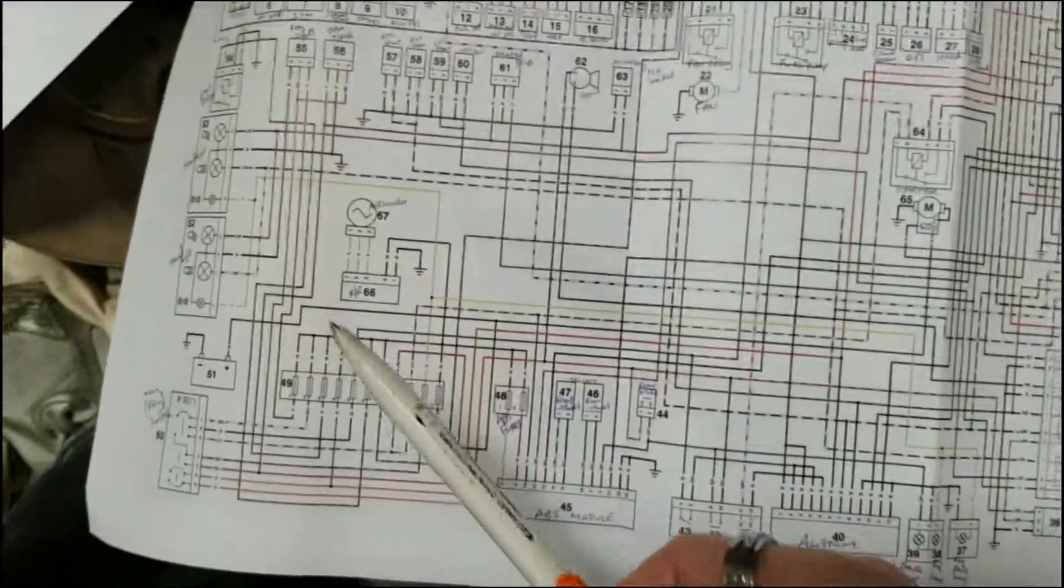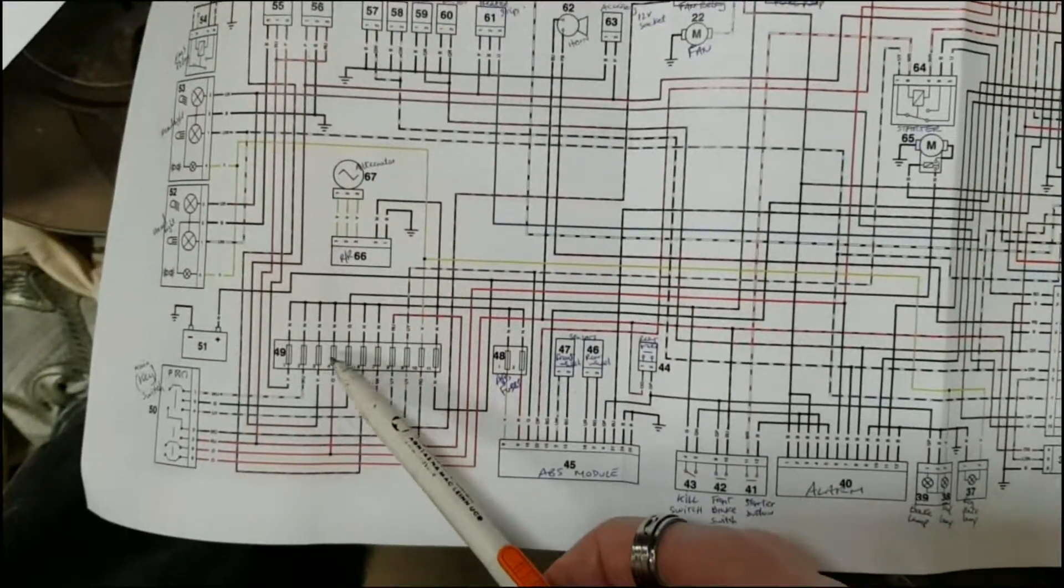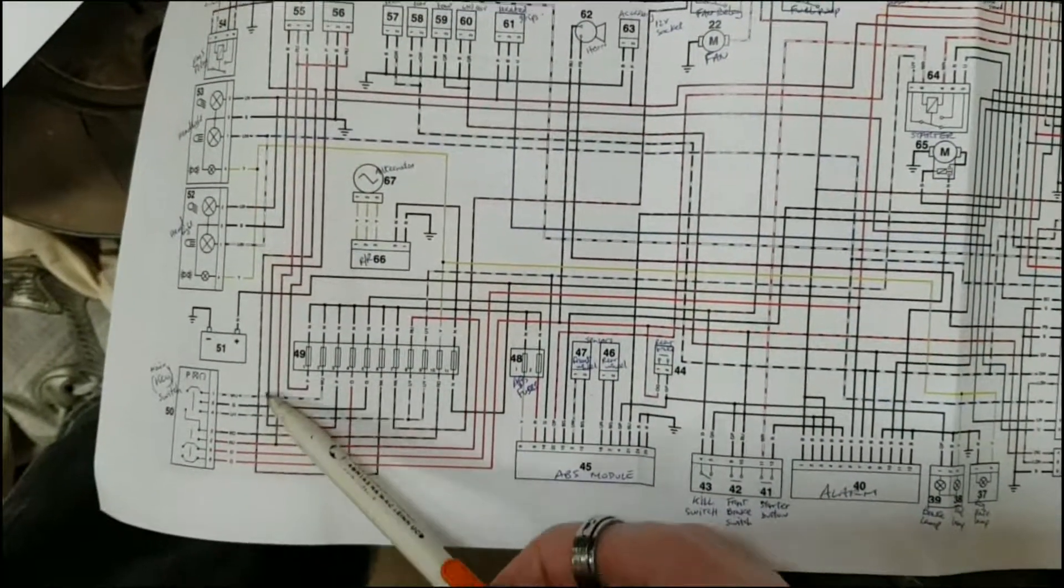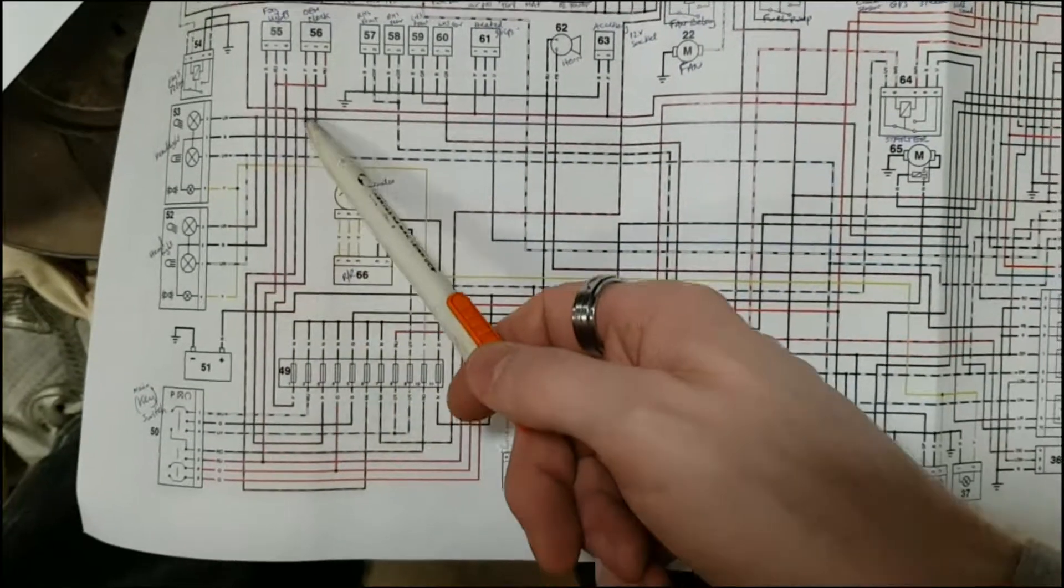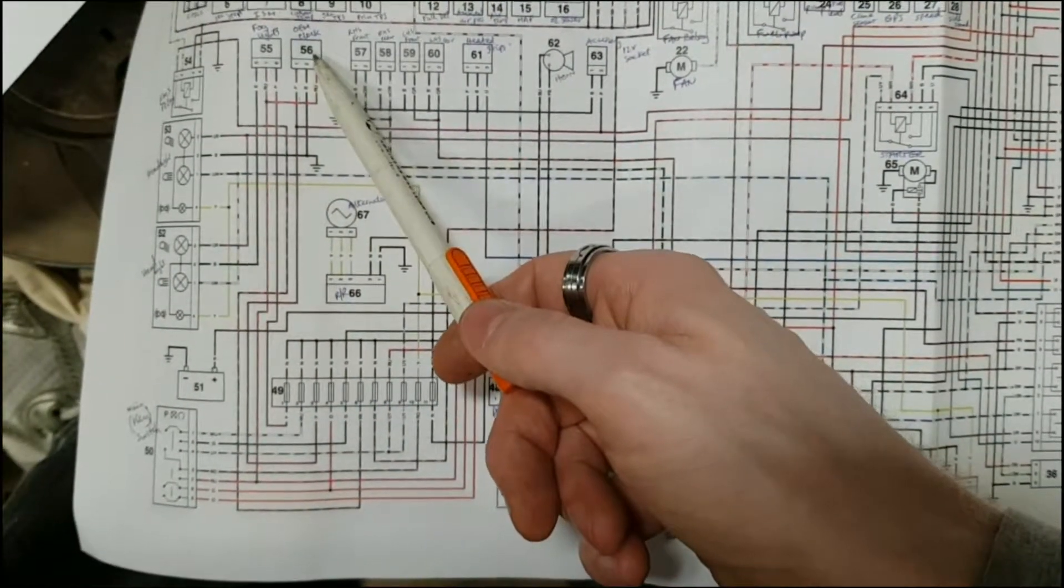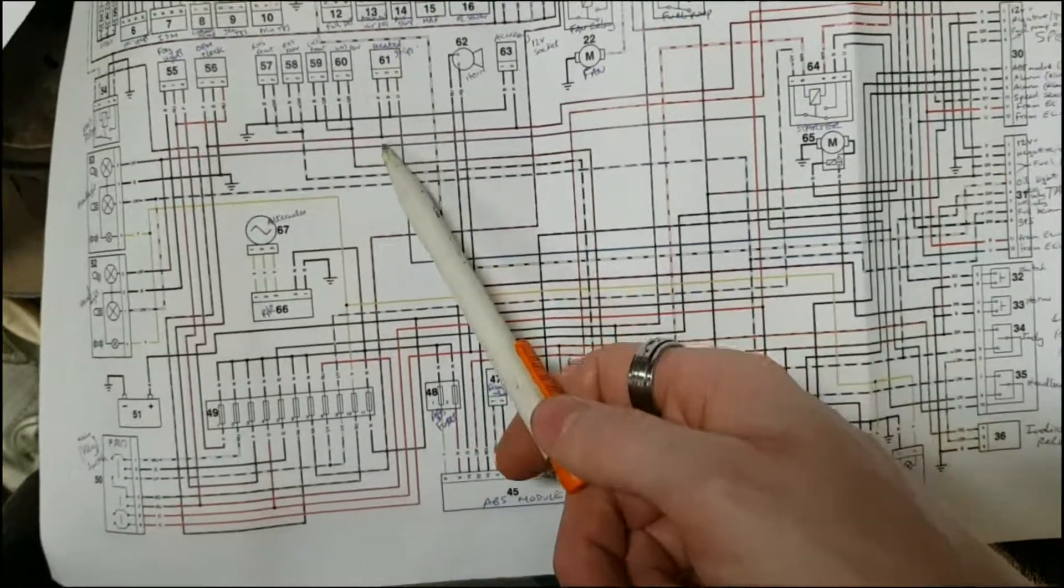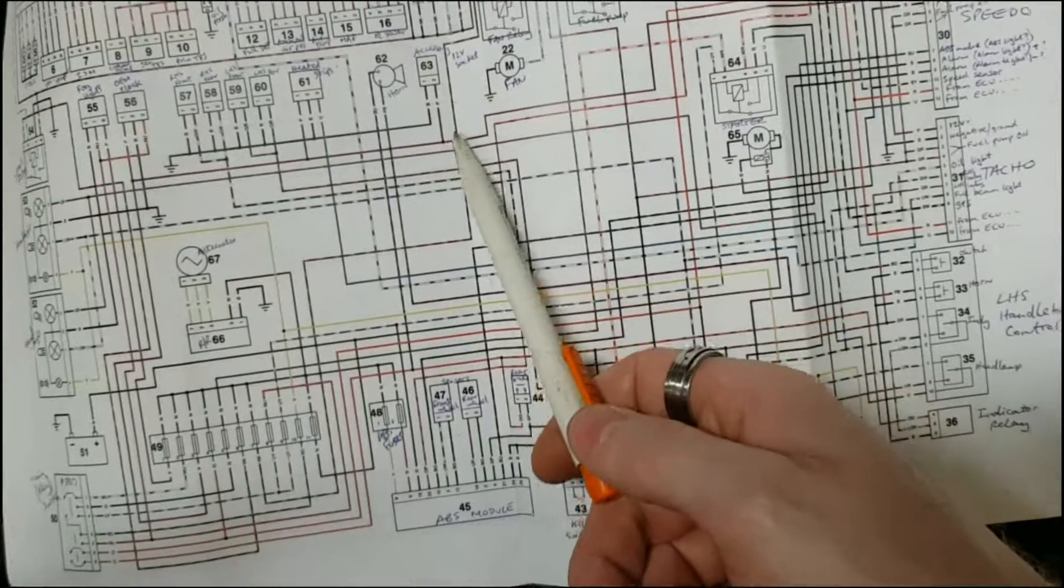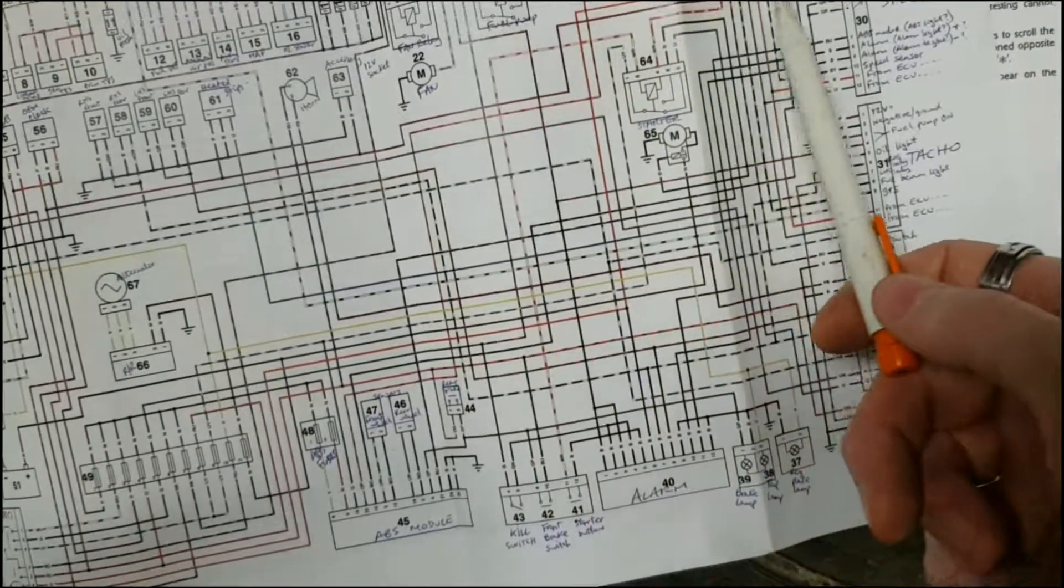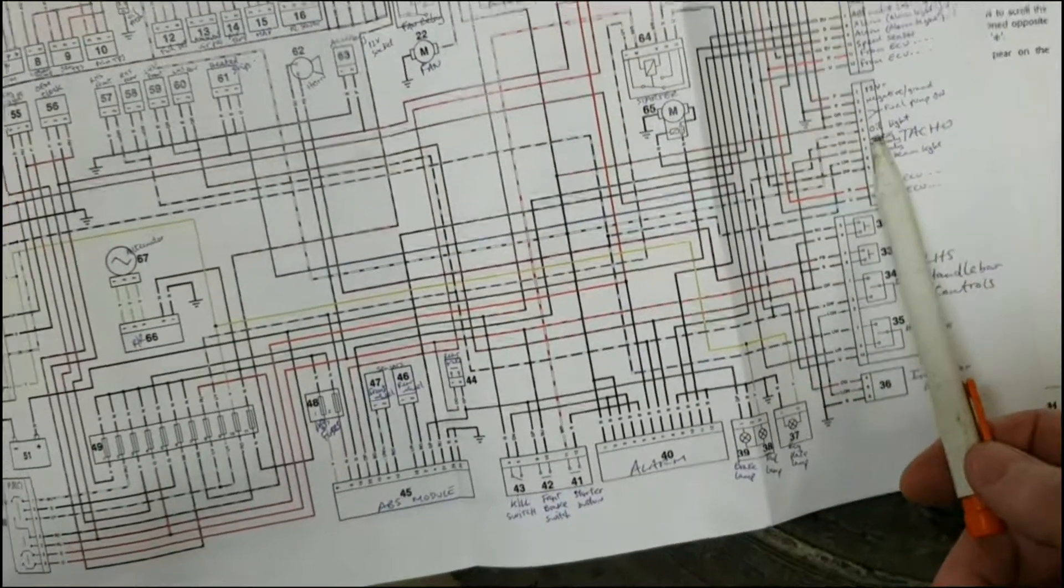Focusing on number three here is for the heater grips according to the diagram inside the fuse box lid. Through that purple wire it supplies OEM clock or the accessory clock, heater grips, accessory 12 volt socket, and speedometer and tachometer.